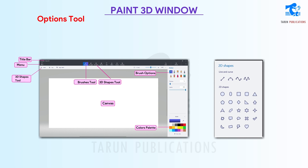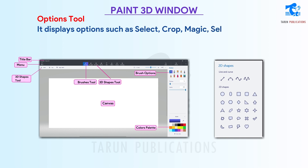Options tool: It displays options such as Select, Crop, Magic Select, 3D View, Mixed Reality, and Zoom Slider.